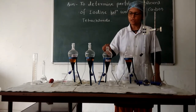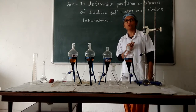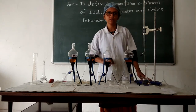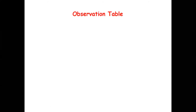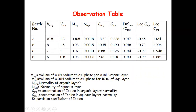Likewise, separate out the aqueous layer from separating funnels B, C, and D and titrate against 0.01 normal sodium thiosulphate and note down the readings. Now we will see observations and the observation table. V organic readings are those obtained for A, B, C, and D when titrating the organic layer. V aqueous readings are those obtained from titration of the aqueous layer against 0.01 normal sodium thiosulphate. V organic is the volume of 0.1 normal sodium thiosulphate per 10 ml of organic layer, and V aqueous is the volume of 0.01 normal sodium thiosulphate for 10 ml of aqueous layer.